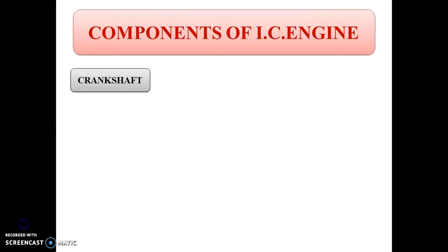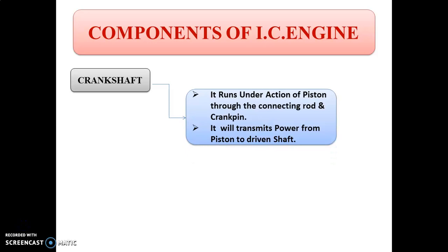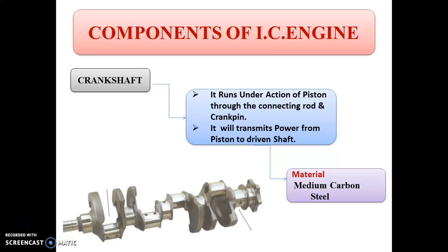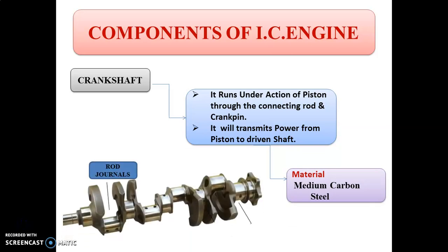The next component is the crankshaft. The crankshaft of the IC engine is the device used for getting power from the motion of the piston and connecting rod. This power is applied to the flywheel. The crankshaft runs under the action of the piston through the connecting rod and crank pin, and also transmits power from the piston to the driven shaft. The material for the crankshaft is medium carbon steel or alloy steel. The figure shows the crankshaft having rod journals and main journals.